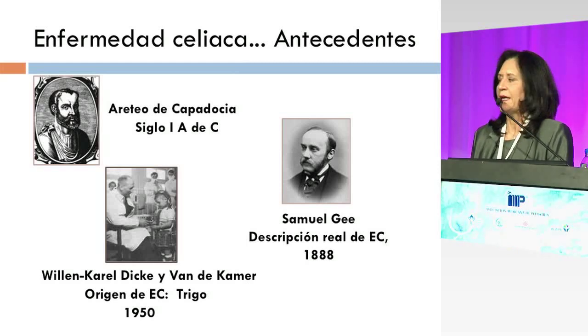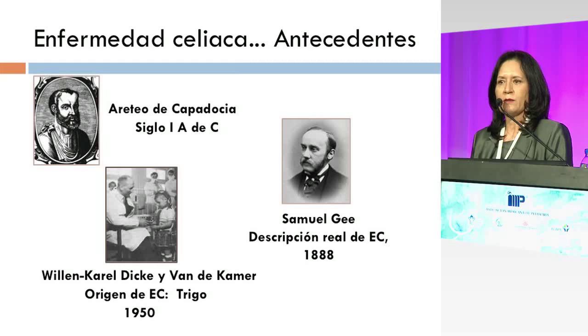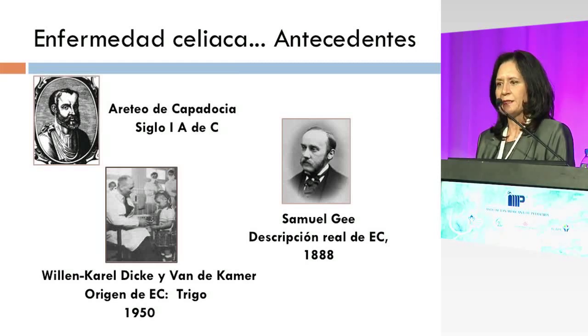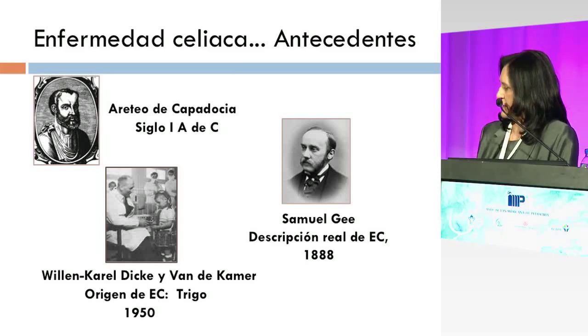El pediatra holandés Karel Dick fue quien realmente hizo esa asociación de la enfermedad con la ingesta de pan, porque cuando en Holanda, durante la Segunda Guerra Mundial, tuvieron una hambruna muy importante, vio que sus pacientes que tenían enfermedad celíaca mejoraron durante la hambruna, se recuperaron básicamente, y que después de que se introdujo nuevamente el alimento, volvieron a recaer. A él se debe esta relación de enfermedad celíaca con el trigo, ya desde 1950.